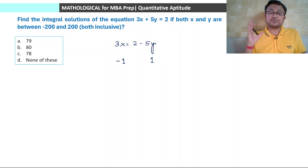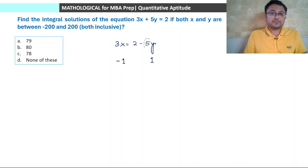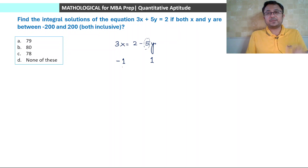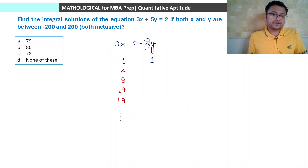Now, since x's first solution is minus 1, we can increase the values of x — but the increase depends on the coefficient of y, which is 5. So the next value of x will be minus 1 plus 5, which equals 4. Then 4 plus 5 equals 9, then 14, then 19, and clearly the last value going upward should be 199.